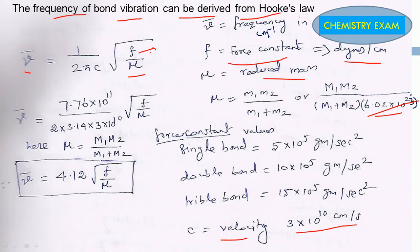Force constant values vary. For a single bond like C-C, we use 5×10^5 grams per second squared. For a double bond like C=C, it's 10×10^5 grams per second squared. And for a triple bond, it's 15×10^5 grams per centimeter squared.